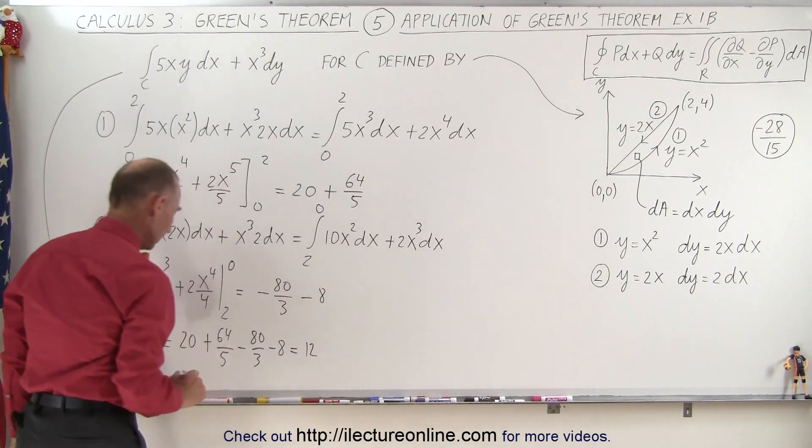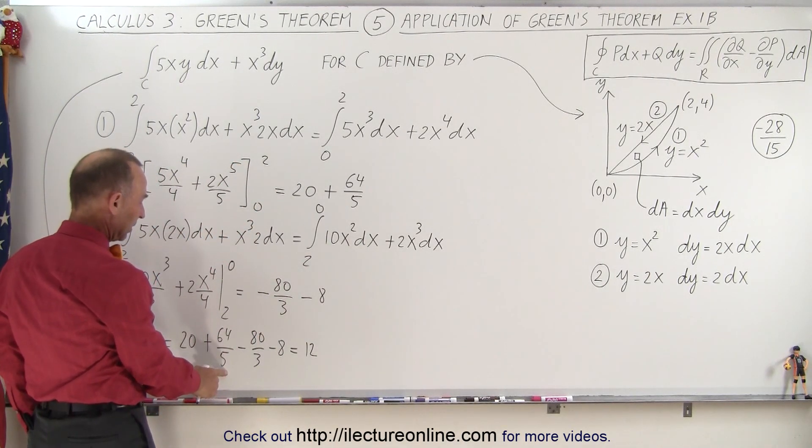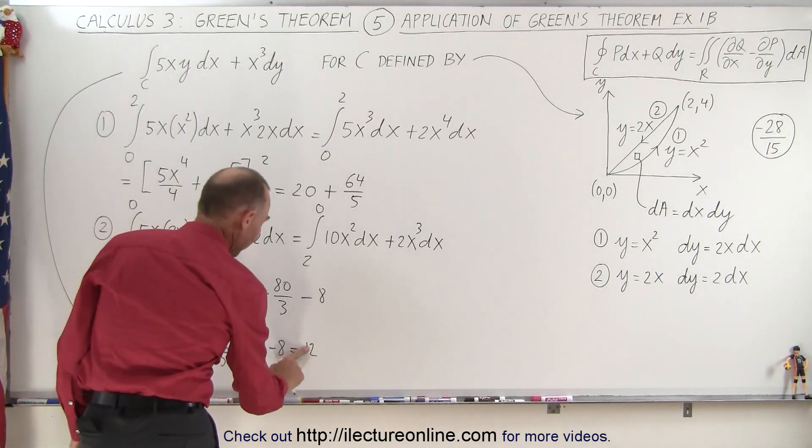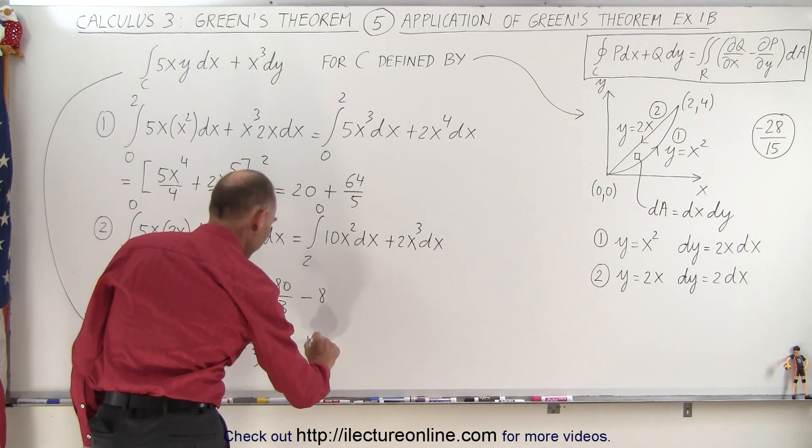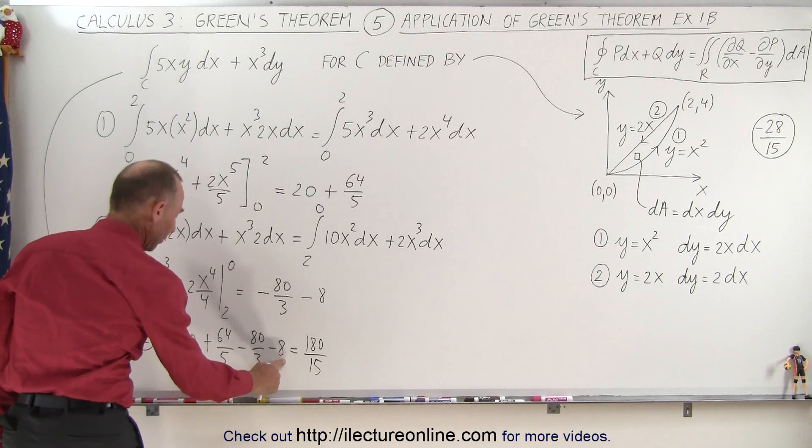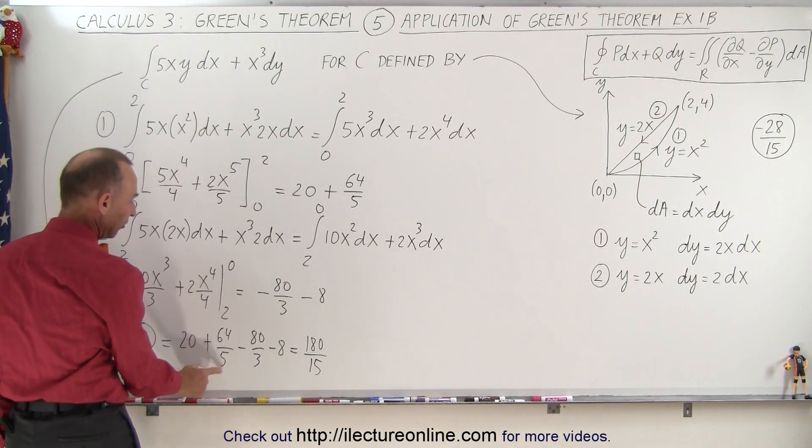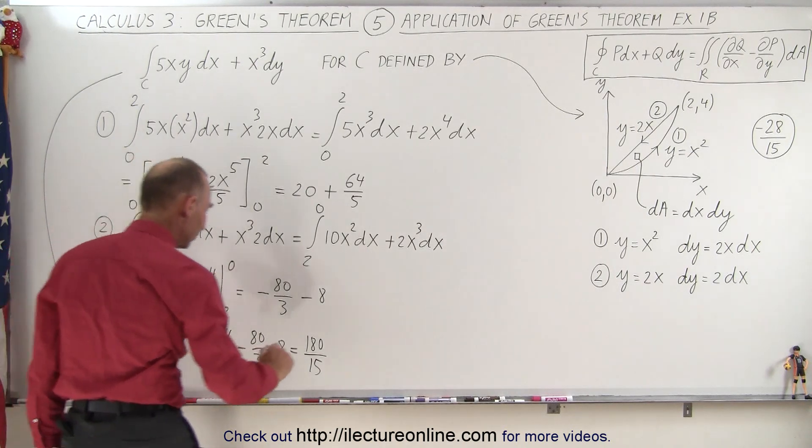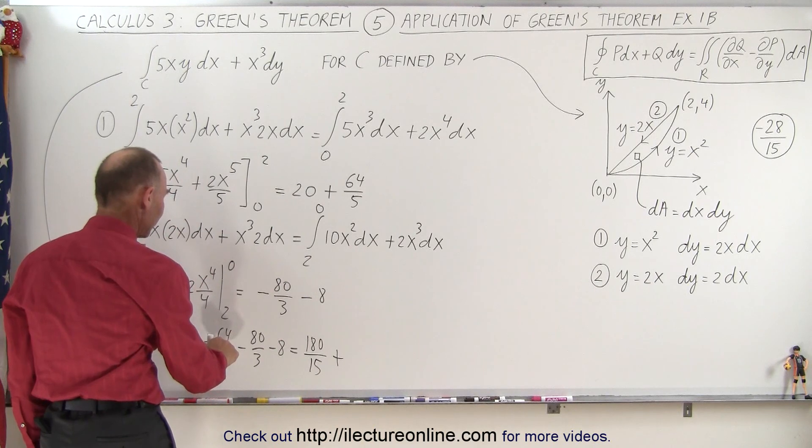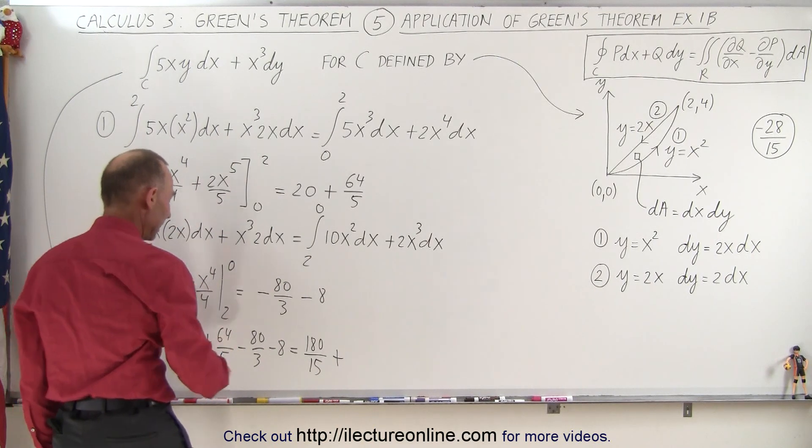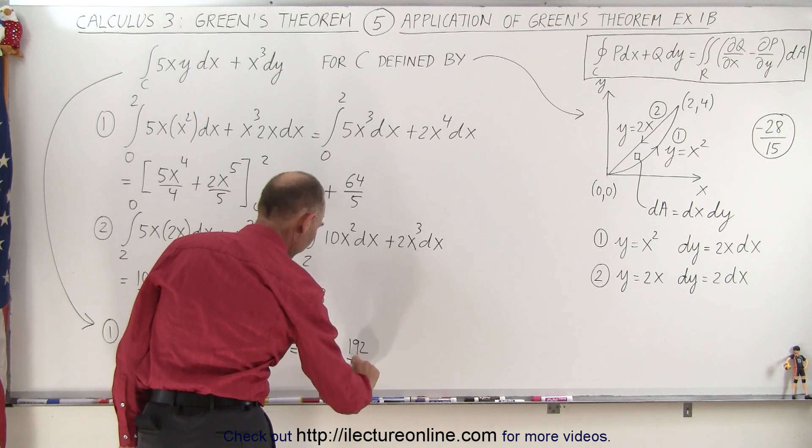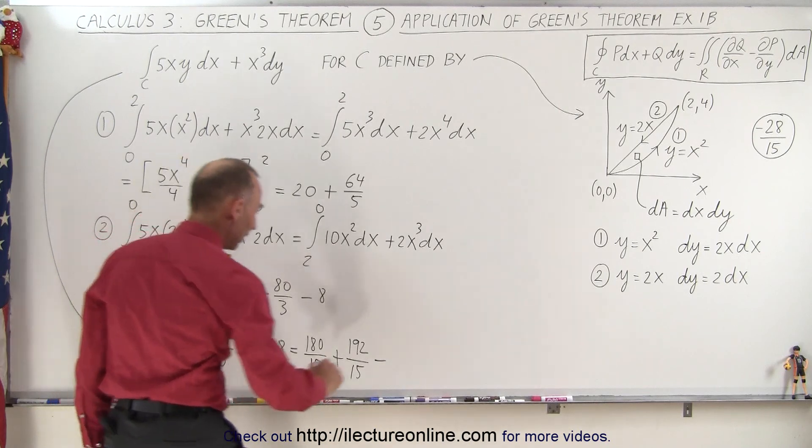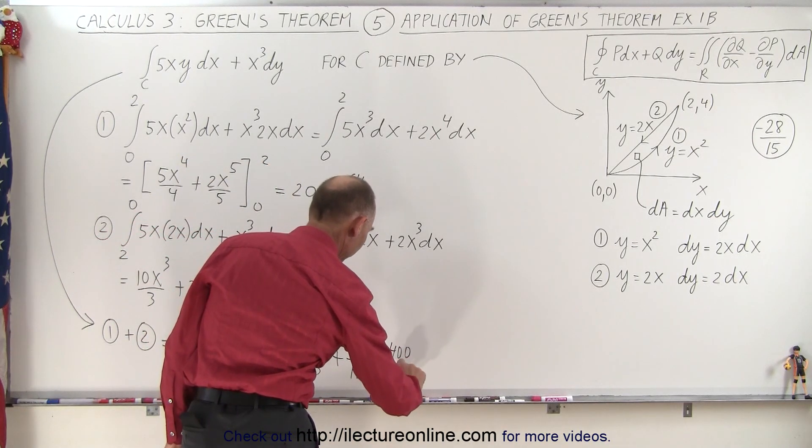So 8 from 20 is 12, so we get 12 plus 64. Let's get a common denominator. 3 times 5 is 15, so 12 times 15 would be 180 over 15. I subtracted 8 from 20, which gives me 12. Since the common denominator is 15, 12 times 15 would be 180. Multiply this times 3, so that would be plus 192 over 15 minus 400 over 15.